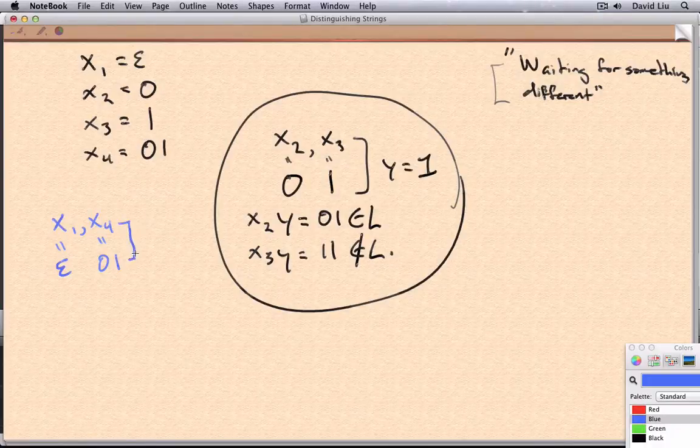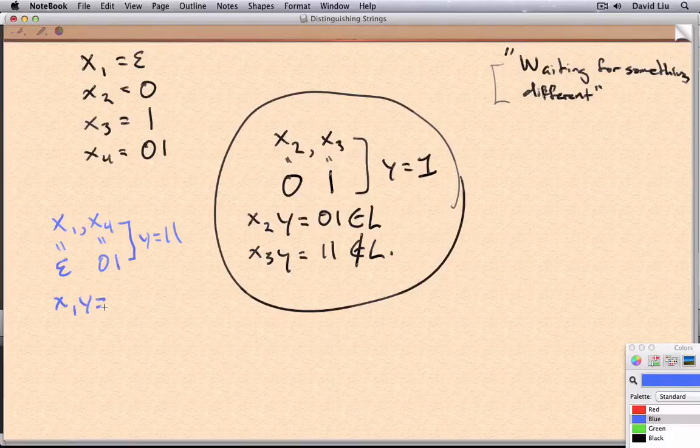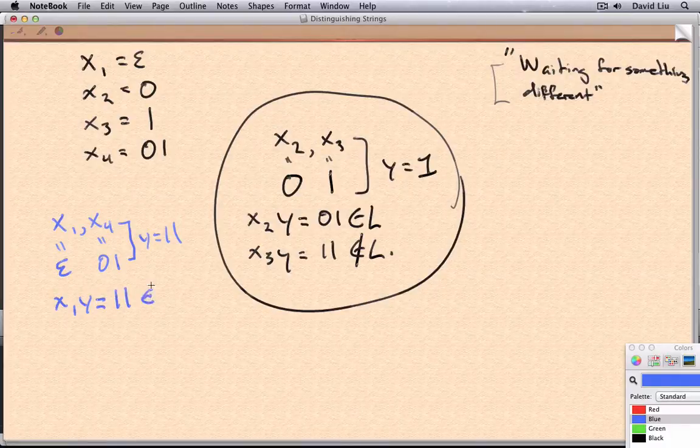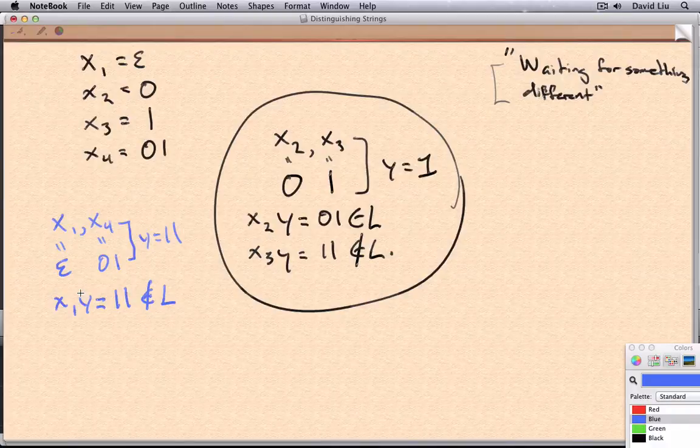So suppose the next two characters aren't 01. Suppose they're 11. Then X1 didn't get what it was waiting for, and so it's not in L. And so X1Y is not in L.